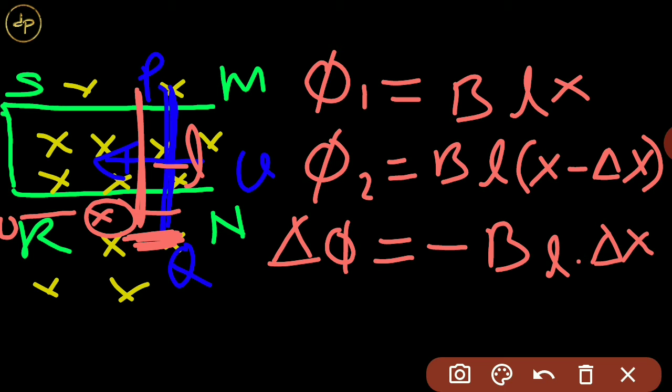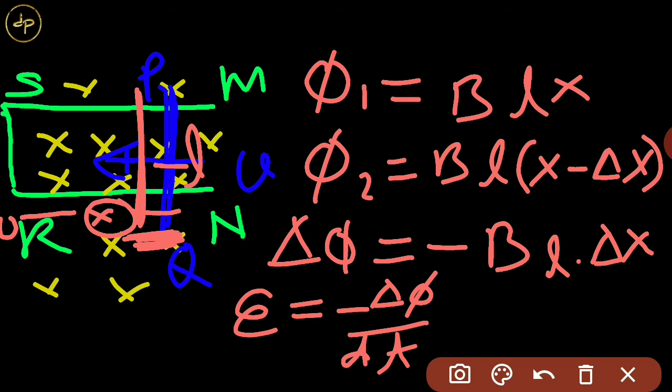So the change in the magnetic flux is equal to minus BL into delta X. And by Faraday's laws of electromagnetic induction, there will be induced EMF. Along with Lenz's rule, minus d phi by dt, the rate of change of magnetic flux, gives plus BL times dx by dt, and that is the speed of that conductor. So this is the induced EMF.